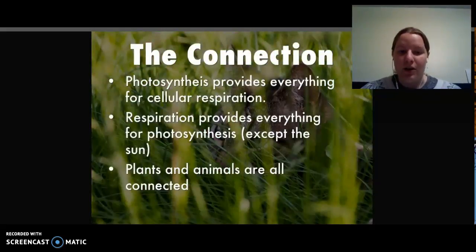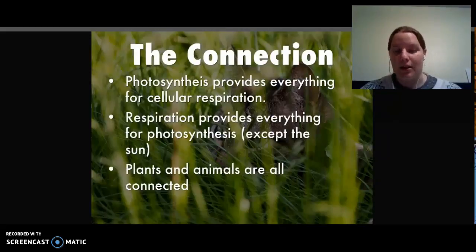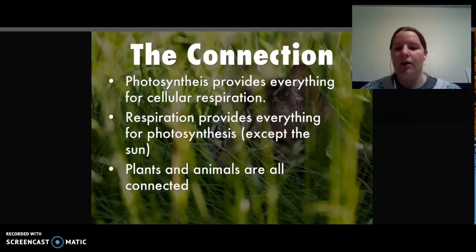So the connection between the two, as you can probably see: photosynthesis makes everything for cellular respiration. Photosynthesis makes oxygen and glucose, which are required for cellular respiration. And respiration provides everything for photosynthesis, except the sunlight. Respiration makes the CO2 and the water, which plants need to do photosynthesis. It's one big circle — plants and animals, they're all connected through these two chemical reactions.